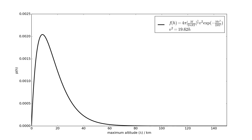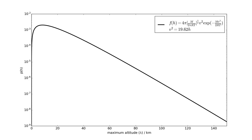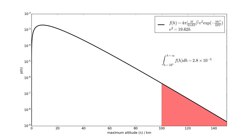Let's see how many particles at sea level actually have sufficient energy to reach the Kármán line, assuming that the particles do not collide with another particle on the way. To do that, we make the y-axis log scale and integrate with respect to h between h equals 100,000 meters and infinity. So about 0.003% of the gas particles at sea level have sufficient energy to reach the Kármán line or beyond, provided those particles do not collide with any other particles on the way there.